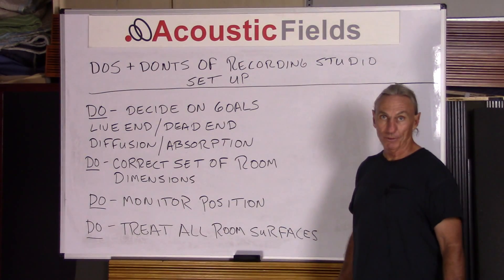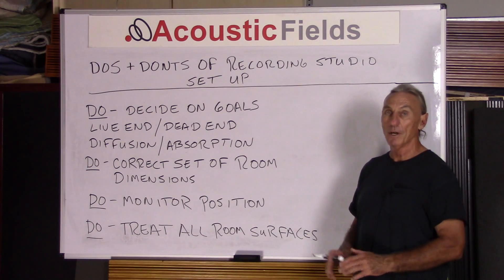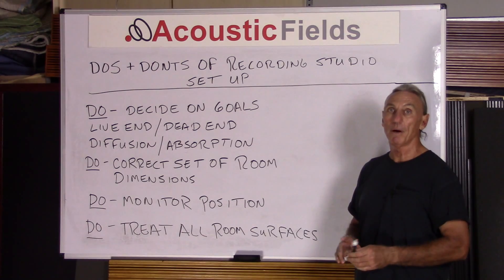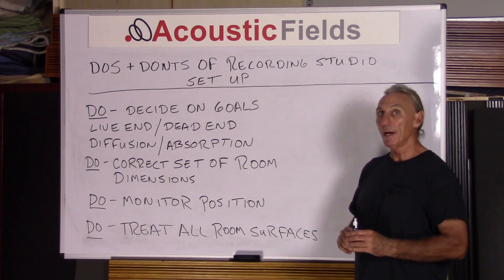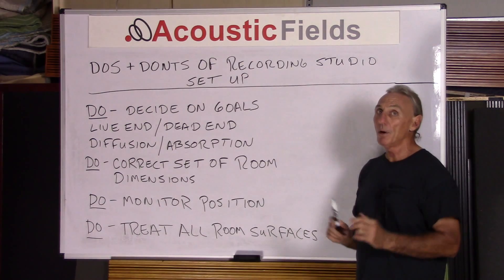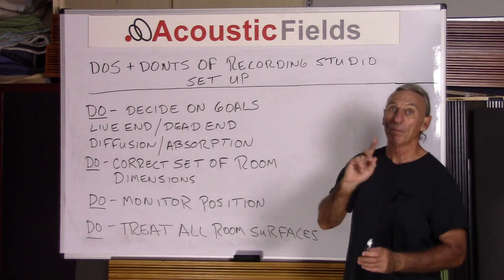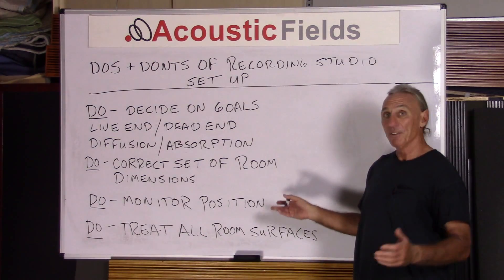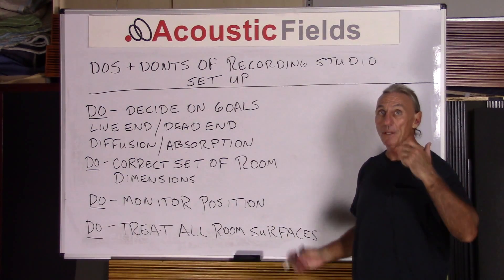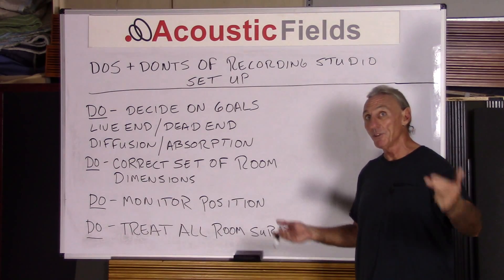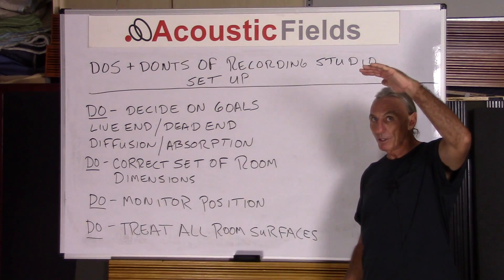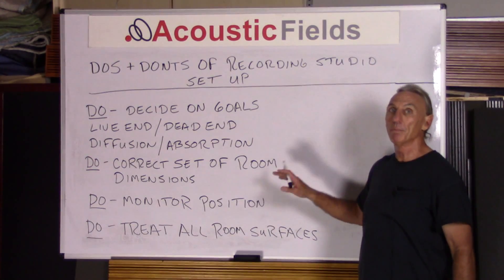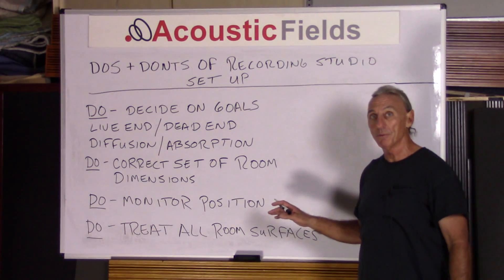Treat the room — all surfaces. I see countless studios that simply don't have proper floor treatment or ceiling treatment. I think everybody realizes that the side walls, front wall, and rear wall need treatment. Those four planes within a room are widely recognized as needing treatment. But the ceiling and the floor are overlooked completely, and those are the two reflections that technically reach your ear first. So we want to treat all room surfaces so we have as much control as possible.